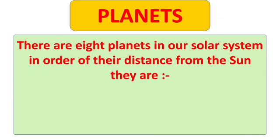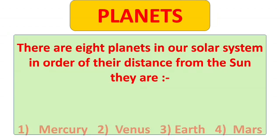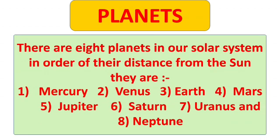Next, we will talk about planets. There are eight planets in our solar system. In order of their distance from the sun, they are Mercury, Venus, Earth, Mars, Jupiter, Saturn, Uranus, and Neptune.